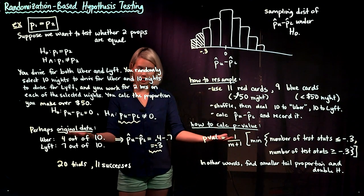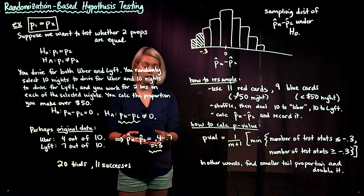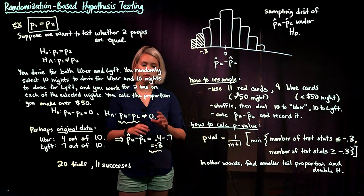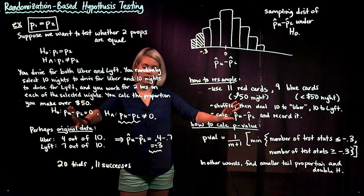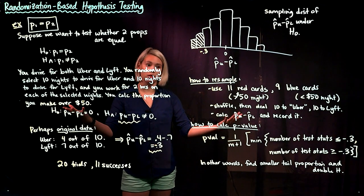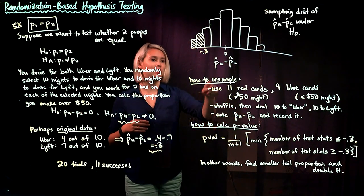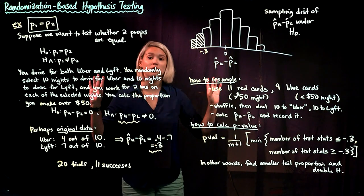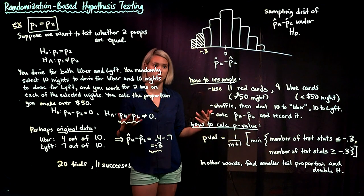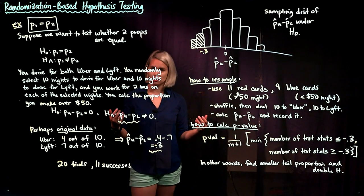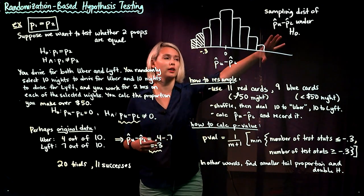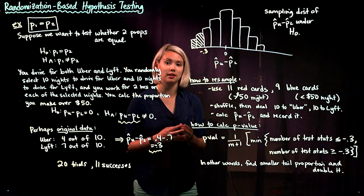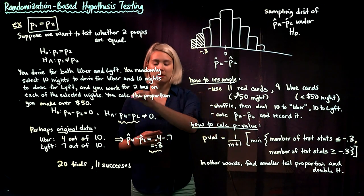We take all the cards, shuffle them back up again, and do another resample — randomly choosing 10 cards for Uber and 10 for Lyft. We calculate the proportion of red cards for each, find the difference P Uber minus P Lyft, and record it. We repeat this over and over until we have a healthy number of test statistics — maybe 10,000 — then plot the sampling distribution as a histogram.